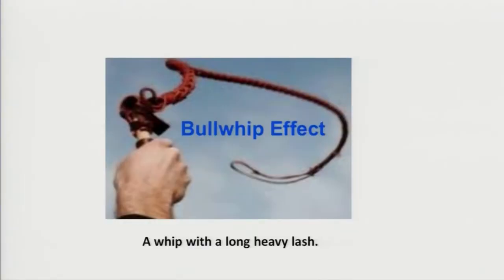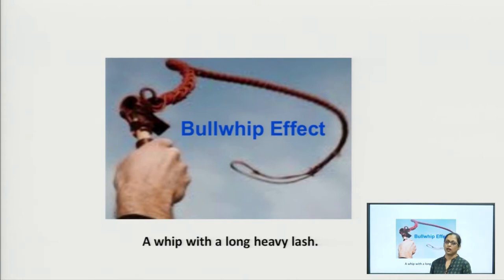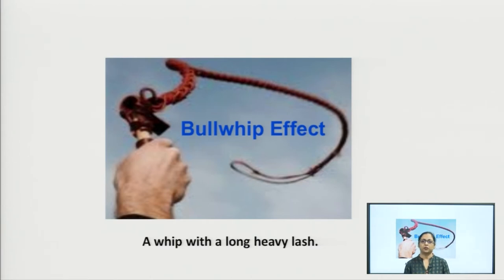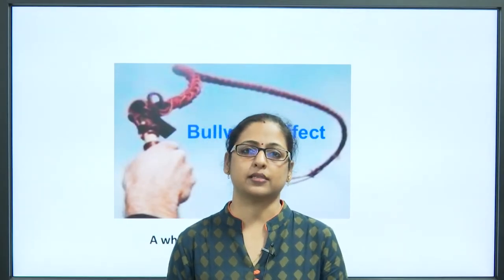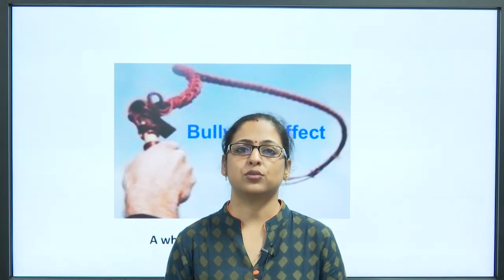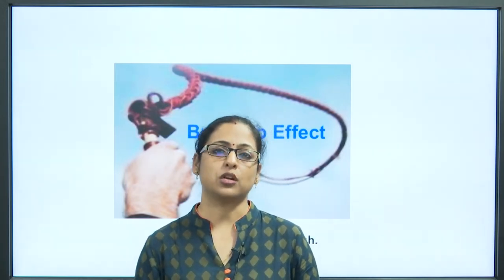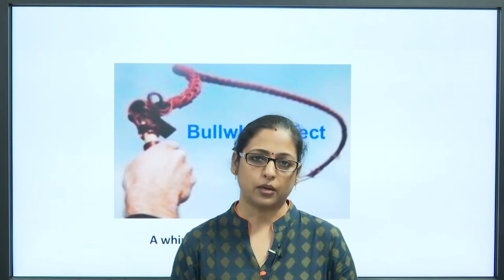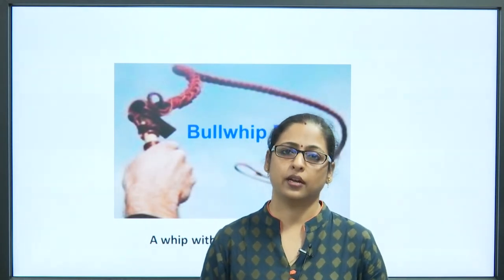As you can see from this picture, it is a picture of a bullwhip. A bullwhip is basically a long whip or lash. Traditionally, if anyone has seen bullock carts or horses, the people who used to ride on them carried a long rope-like material through which they used to control the horses or bullock cart. That particular rope is called a bullwhip. Now, let us understand how this bullwhip is correlated with supply chain.